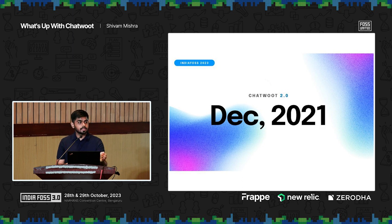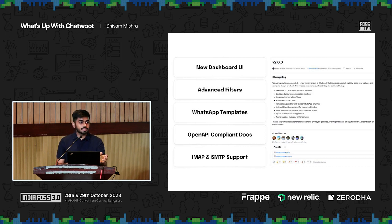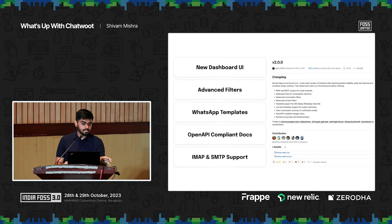The Chatwoot 2.0 release introduced a whole new dashboard UI, a lot of advanced filters, some deeper integration with WhatsApp, and OpenAPI-compliant docs. This was a very critical one because a lot of our users use Chatwoot only as an API server and deeply integrate it in their own dashboard. We also added IMAP and SMTP support, which was surprisingly lacking.